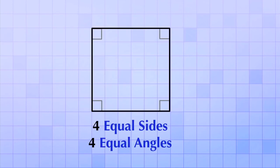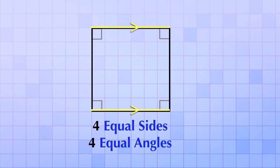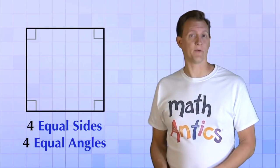Notice also that a square is formed by two pairs of parallel sides. These two opposite sides are parallel, and these two opposite sides are parallel. We'll see why that's important in a few minutes. Okay, so squares are an important type of quadrilateral.